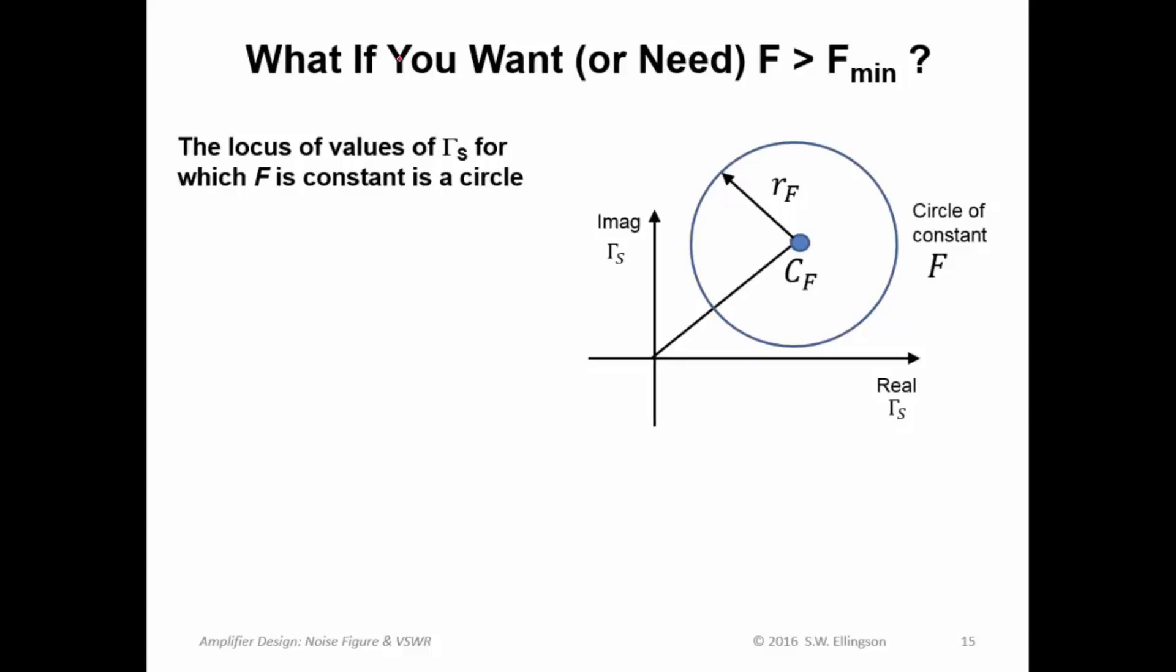Now, what if you want or need a noise figure which is greater than the minimum noise figure? You might stop and say, wait a minute, don't I always want the minimum noise figure? The answer is no, because sometimes you may need to trade off noise figure for gain or for stability or, as we'll see later, for VSWR. So sometimes you need to make a deliberate effort to increase the noise figure so as to achieve other design goals.